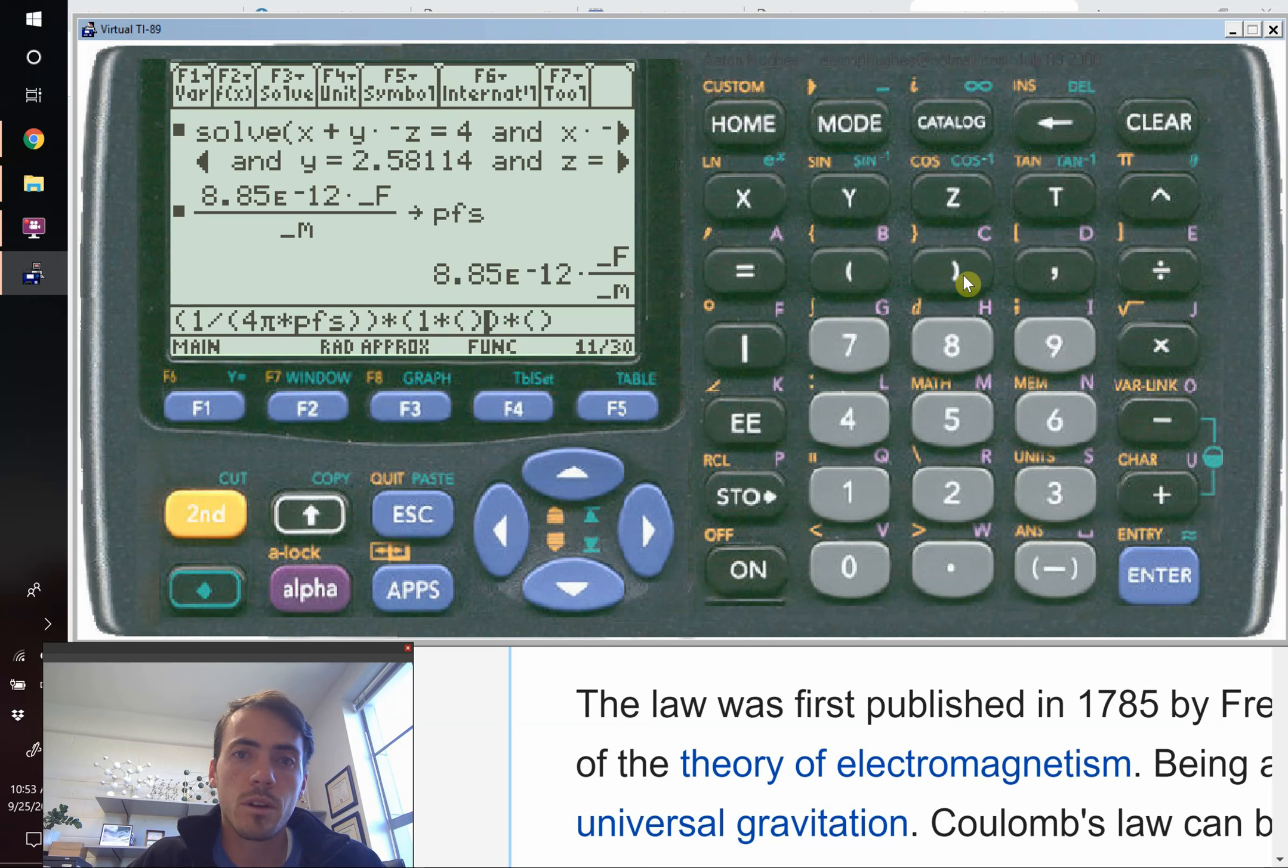That's coulombs. So again, we go up here, underscore, we go capital C O U L. That's for coulombs, right?